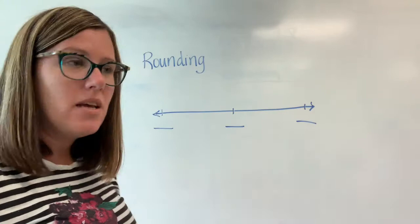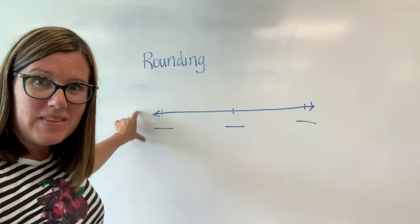So if I wanted to find 53 and wanted to round it I would use an open number line. This is what an open number line looks like.